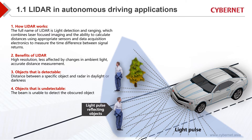LiDAR is relatively common in our daily life. The full name is Light Detection and Ranging. It combines laser-focused imaging and the ability to calculate distance using appropriate sensors. We receive the result by measuring the time difference between signal returns. LiDAR is also less affected by changes in ambient light, providing accurate distance measurement. However, severe weather such as heavy fog or rain will still have a certain impact on simulation results. The beam will be unable to detect any obscured object in the case of backscattering.